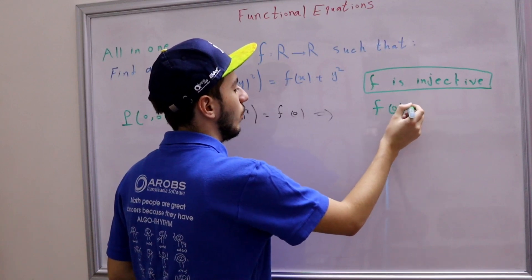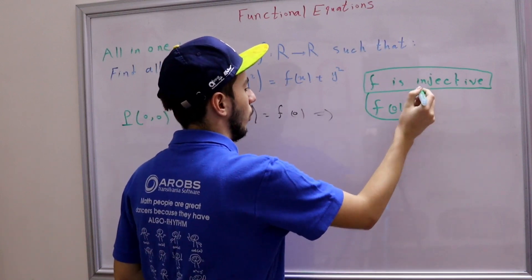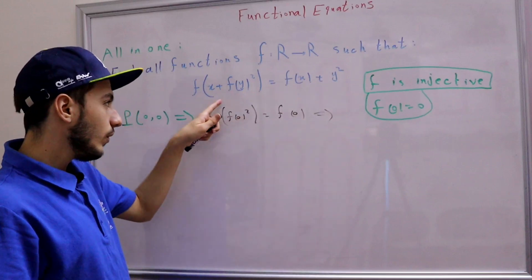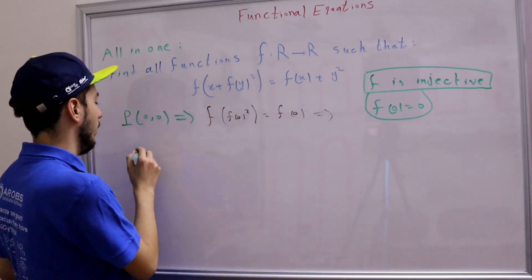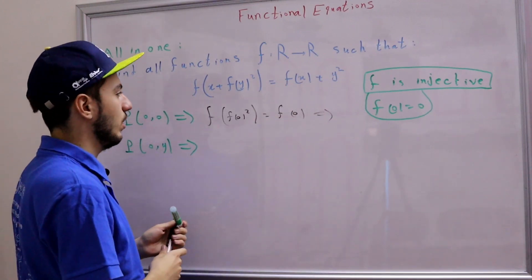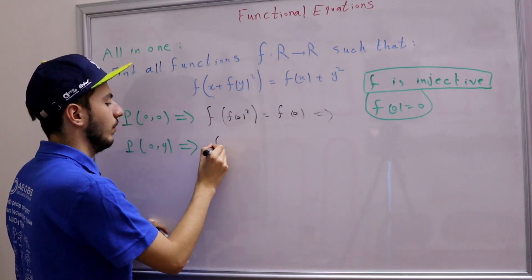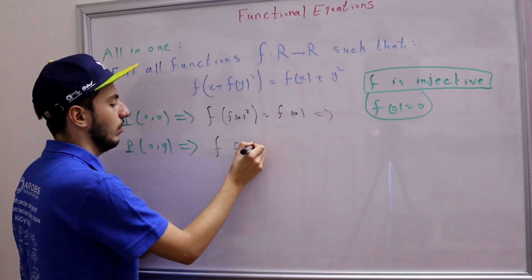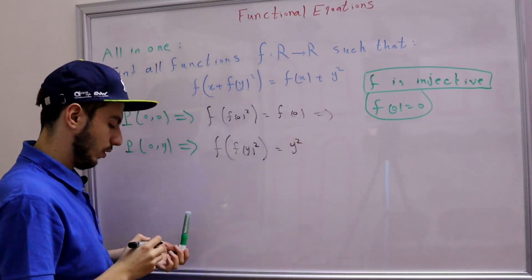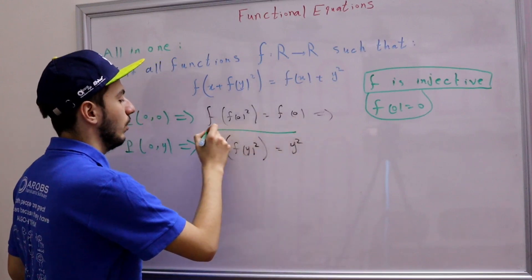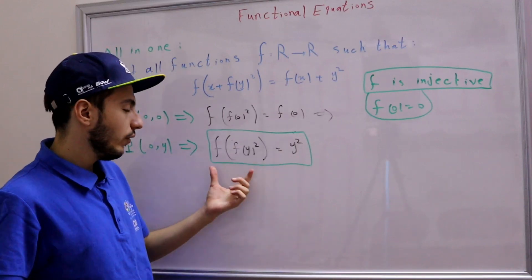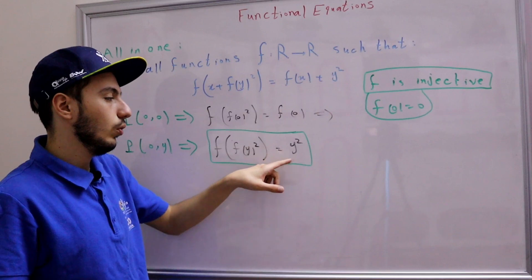So f(0) = 0. Now let's substitute x = 0. That gives us f(f(y²)) = y². This is an important and useful relation. f of something equals y² — so f(f(y²)) = y².